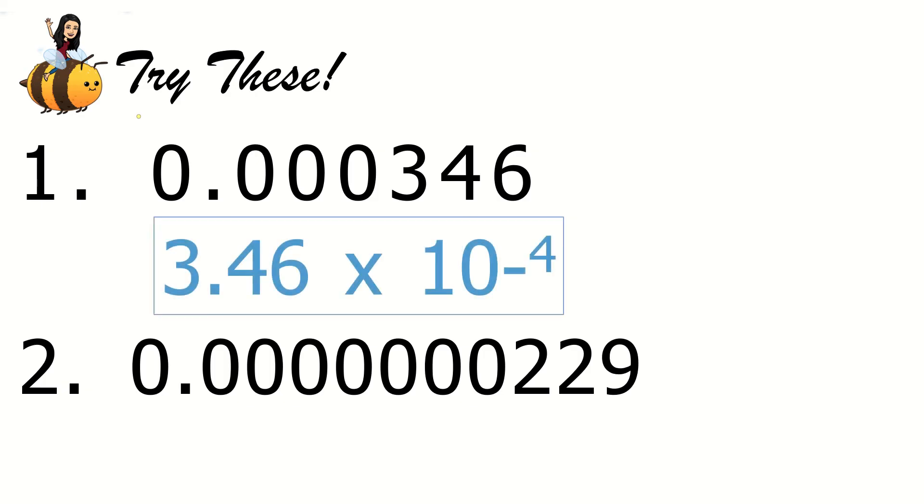For number 1, it's 3.46 times 10 to the power of negative 4. Negative as the exponent because it's a small number. How about for number 2? It's 2.29 times 10 to the positive 4. Is that correct? No, that is incorrect.